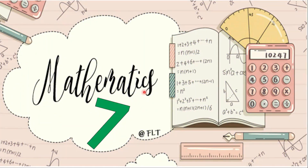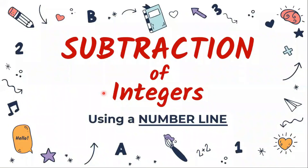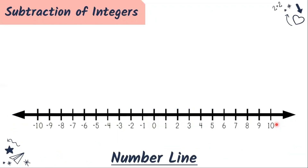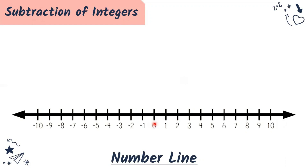Good day, welcome to Mathematics 7. For today we have subtraction of integers using a number line. We have a number line here with zero at the middle, positive numbers to your right, and negative numbers to your left.